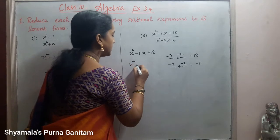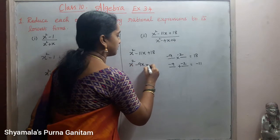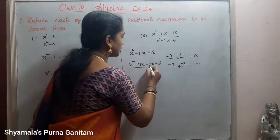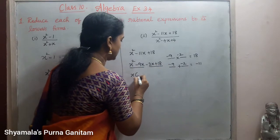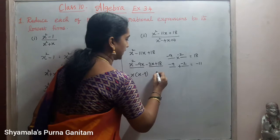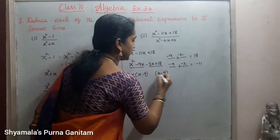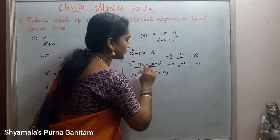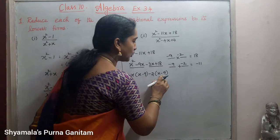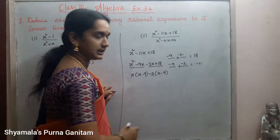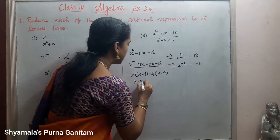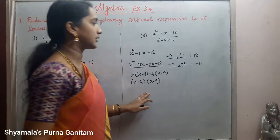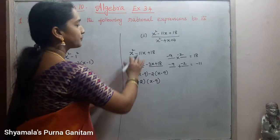So x squared minus 9x minus 2x plus 18 — grouping the first two and last two: x into x minus 9, and minus 2 into x minus 9. Minus 2 times x is minus 2x, and minus 2 times minus 9 is plus 18. So the factors for the numerator are x minus 2 and x minus 9.